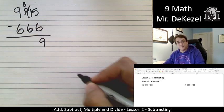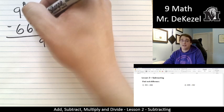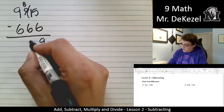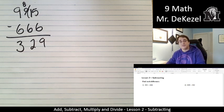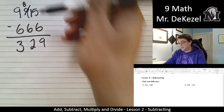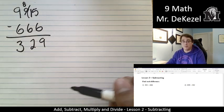That is nine. Eight is left over in this column. So eight minus six is two and nine minus six is three. So our final answer is 329. So the borrowing happens when the top number is smaller than the bottom number. That is when we borrow.